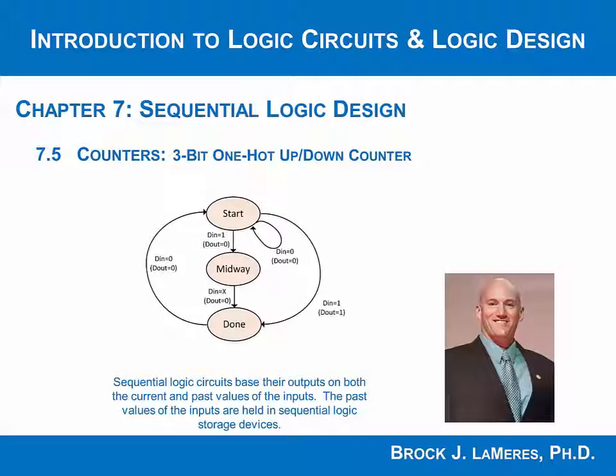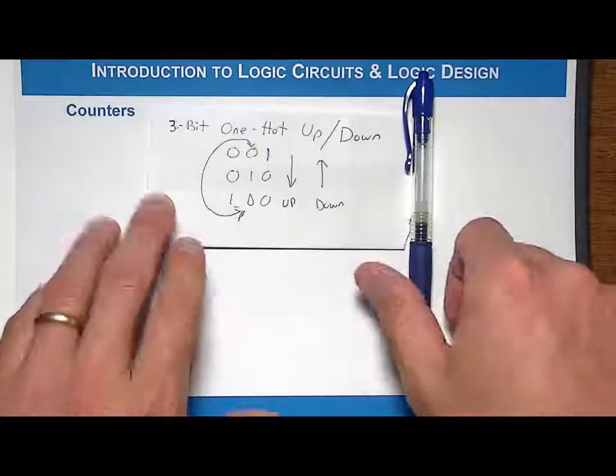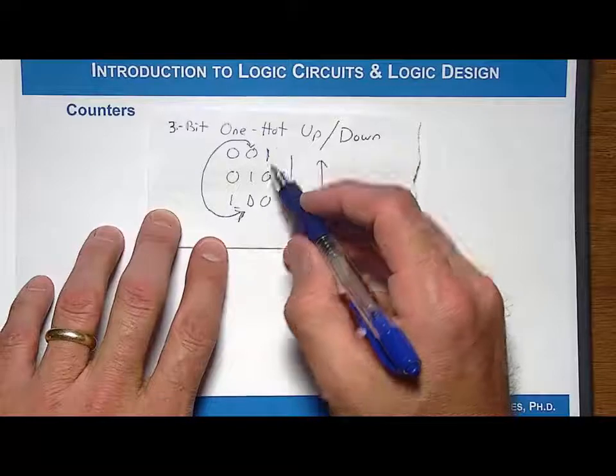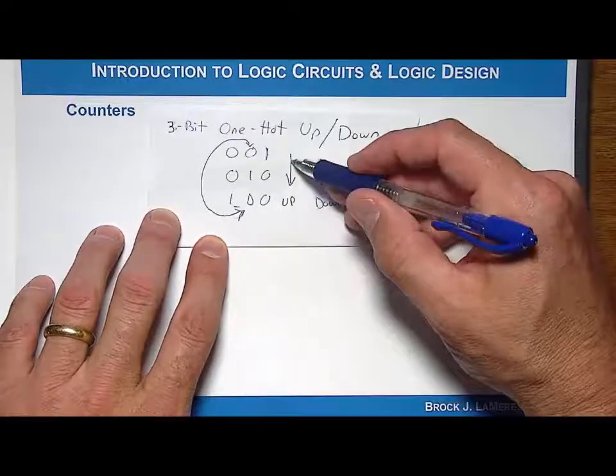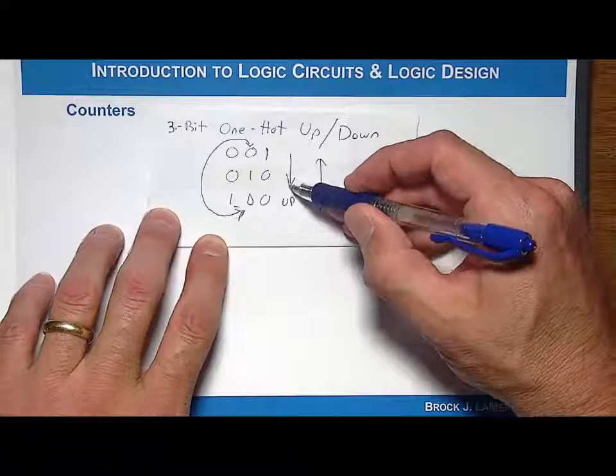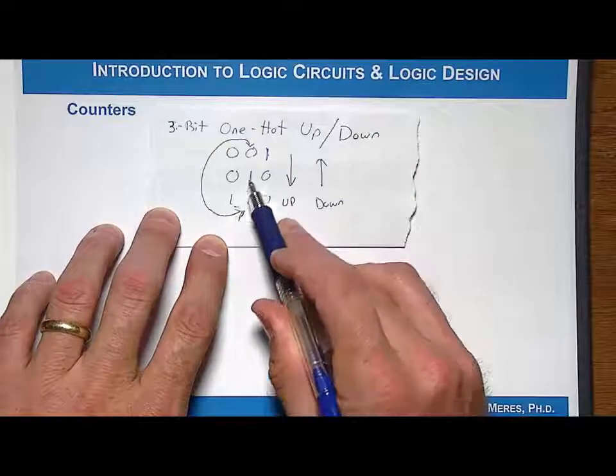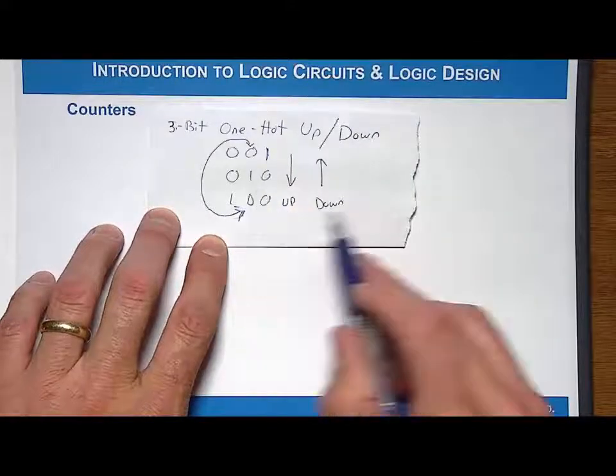Now let's look at another one-hot counter, but this time let's create one that goes both up and down. Up will be defined as moving the one from the least significant bit up to the most significant bit, so you can think of it as up means this way, and down means moving the one from the most significant bit to the least significant bit, moving that way.